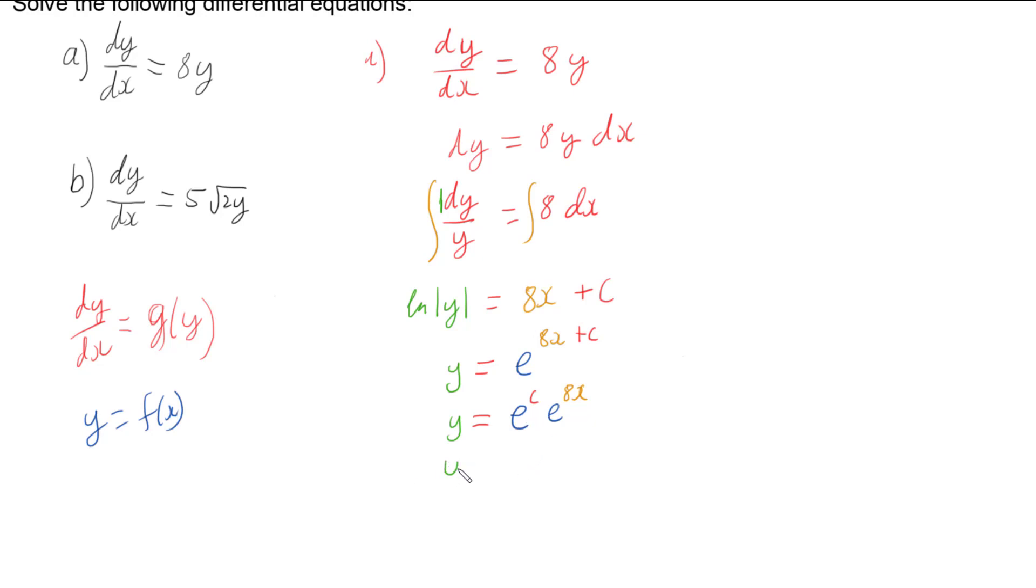So what we do is we replace this e to the c with A, so I've got A which is a new constant and leaving us with e to the 8x, and we just say where A equals e to the c.